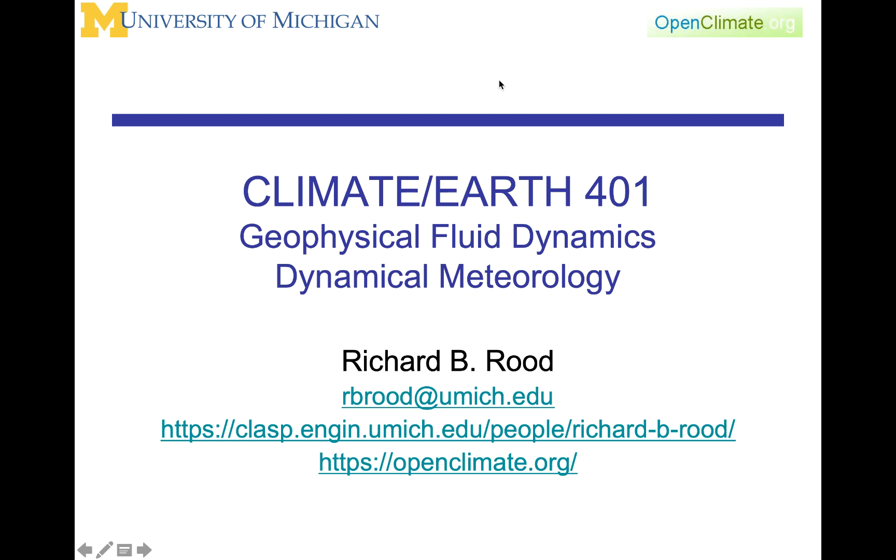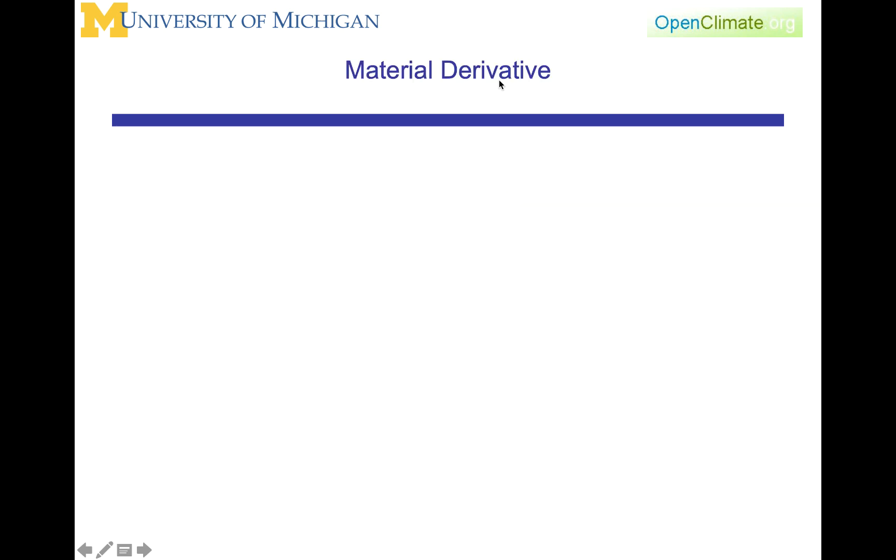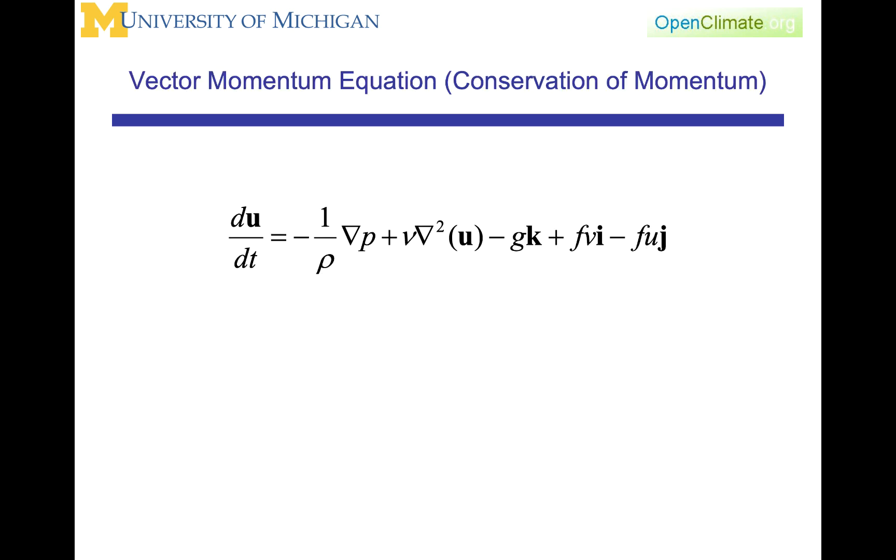This presentation in Climate and Earth 401 is about the material derivative. We wrote the vector momentum equation like this, where we're looking at momentum per unit mass, du/dt, acceleration, equal to a pressure gradient term, a viscosity term, a gravity term, and a Coriolis term. This is one simplified form of the momentum equation.